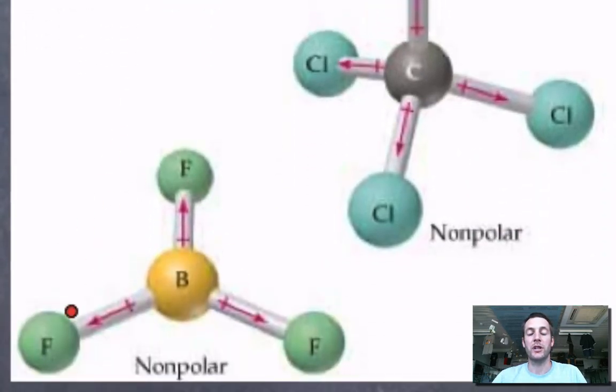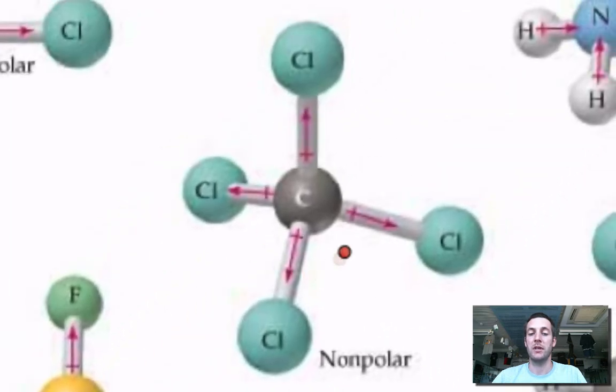If I've got a trigonal planar arrangement, remember this is trigonal planar with a 120 degree bond angle, even if I've got very electronegative atoms out here, because these polar bonds are cancelling one another out, so because this geometry is very symmetrical, the molecule ends up being non-polar. Same thing here with tetrachloromethane that we've just looked at, the bonds cancel one another out.